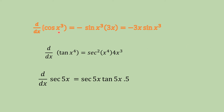The derivative of cos of x cubed: since the derivative of cos x is minus sin x, the answer is minus sin(x cubed) multiplied by the derivative of x cubed. The derivative of x cubed is 3x squared. So the final answer is minus 3x squared times sin(x cubed).